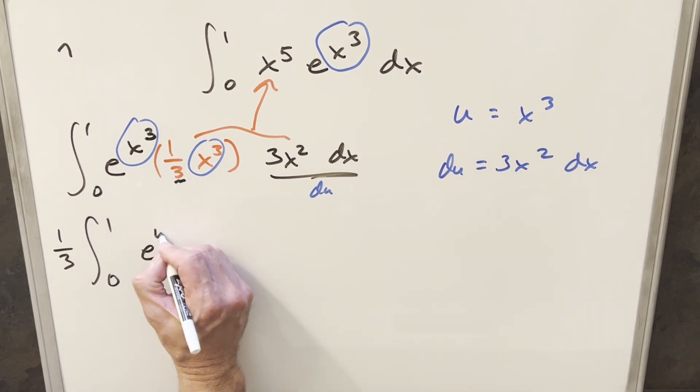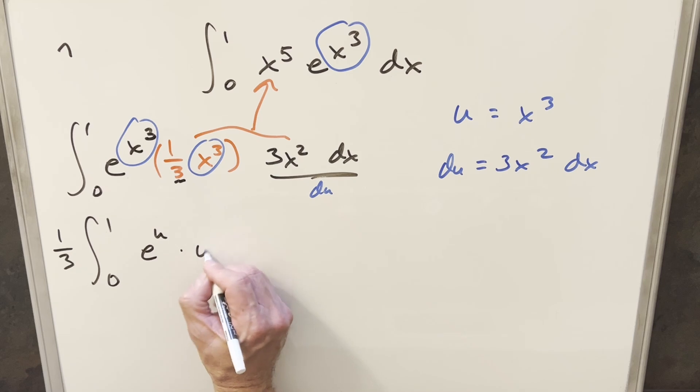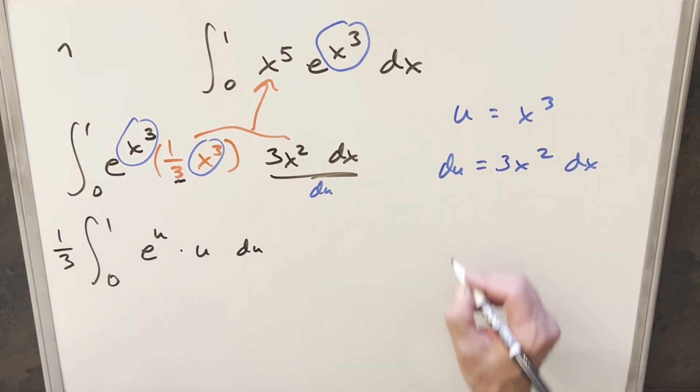Then for this part, this is just going to become e to the u. This is going to give me a u here. And this right here is du. But for this, what we can do is just integration by parts.